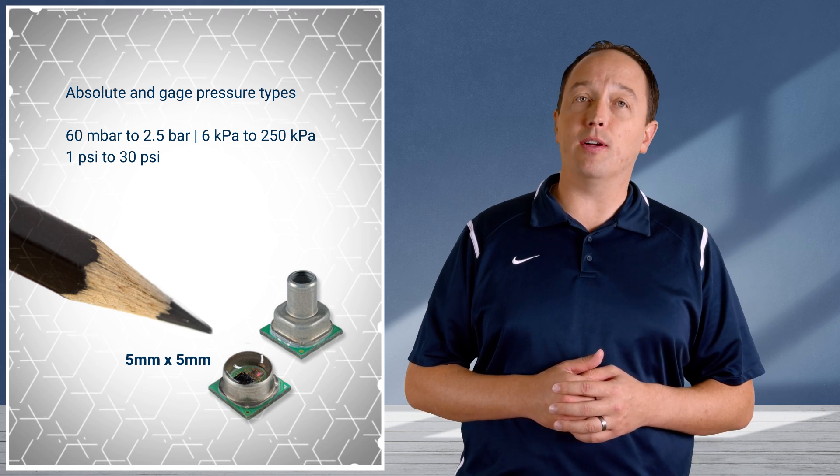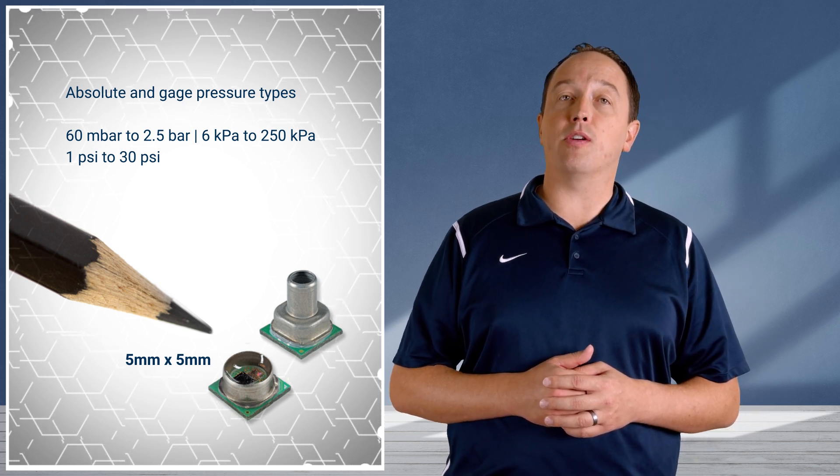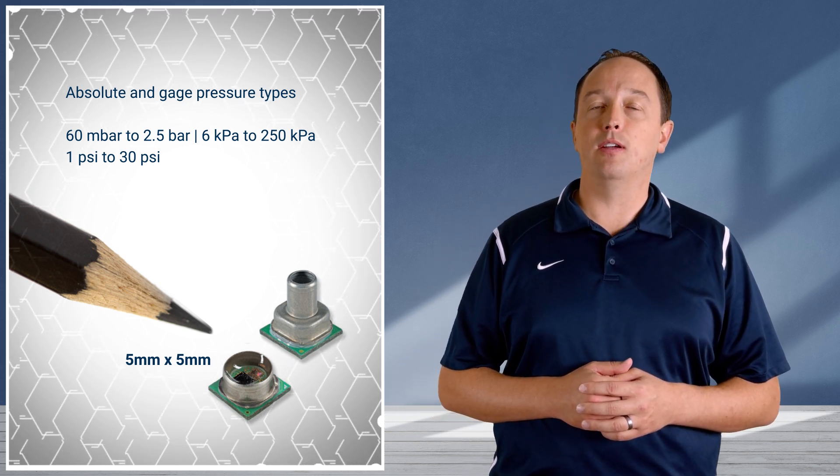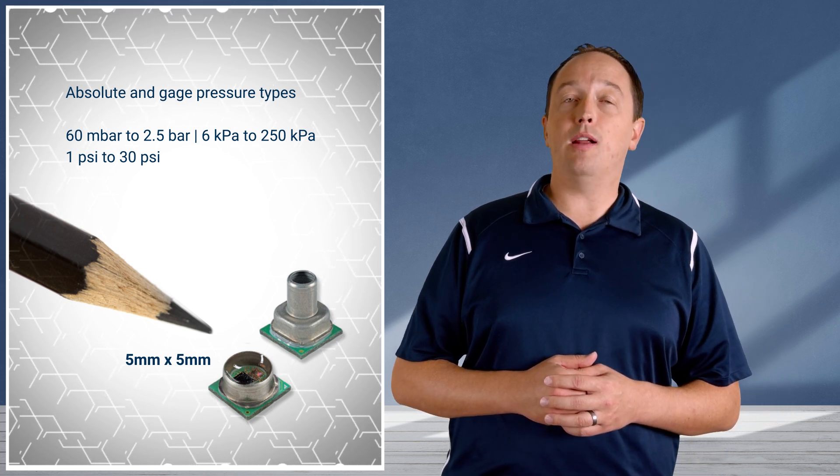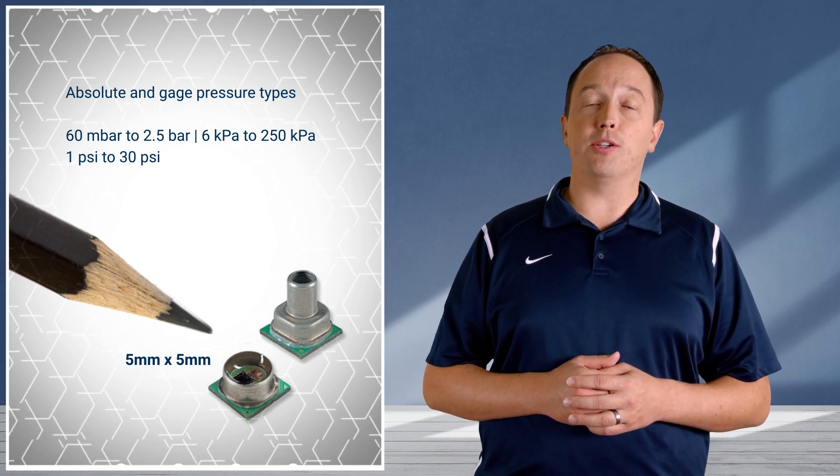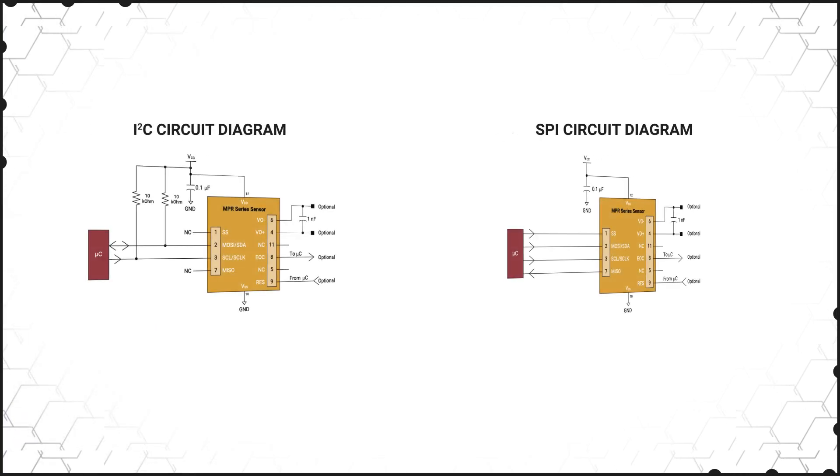They're offered with short or long stainless steel pressure ports and in a variety of absolute or gauge pressure ranges. The MPR series includes an onboard ASIC that compensates for a variety of factors over the 0 to 50 degrees Celsius temperature range.